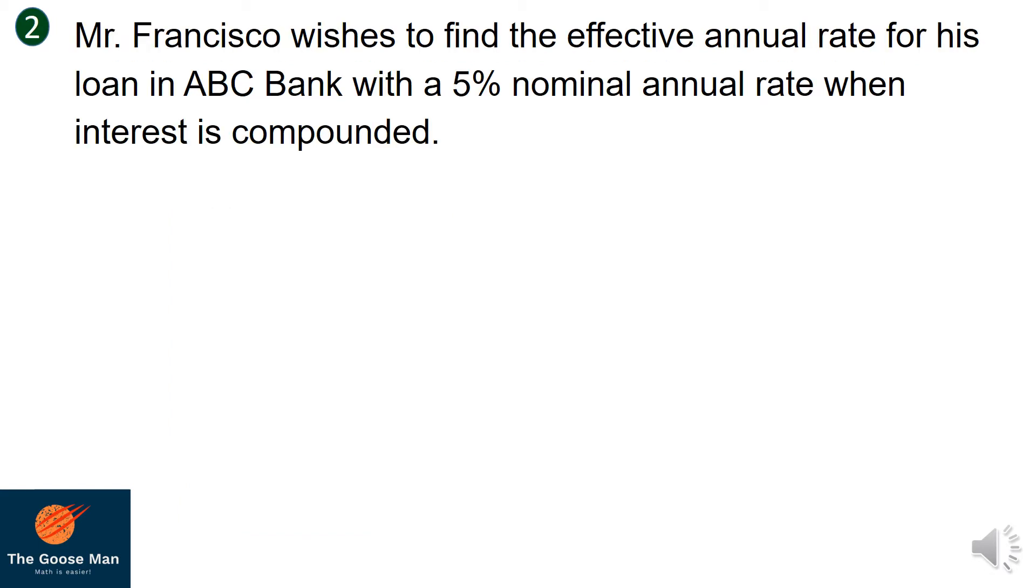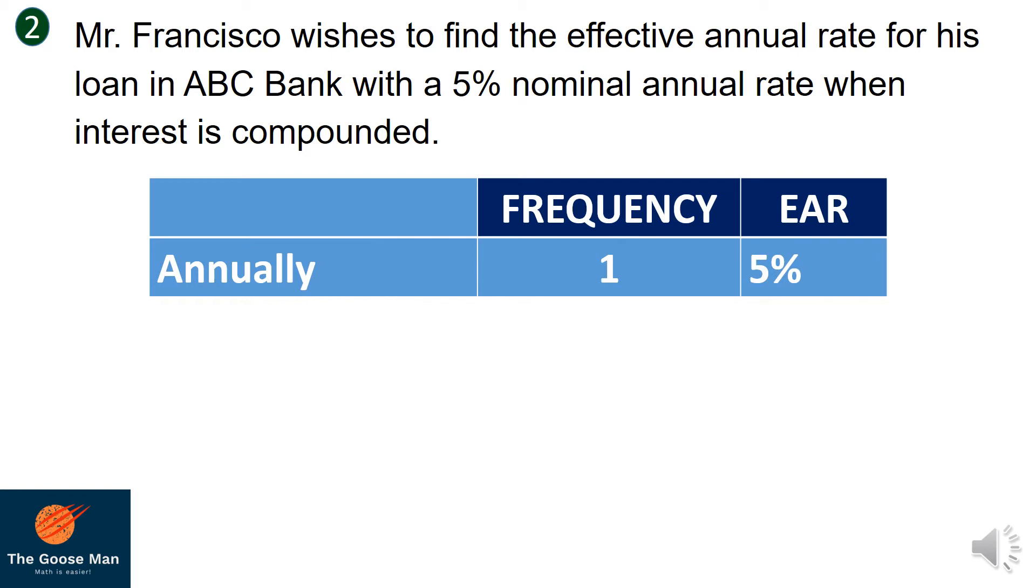If we want to know the relationship of the compounding frequency and the effective annual rate, let us consider this example. Mr. Francisco wishes to find the effective annual rate for his loan in ABC Bank with a 5% nominal annual rate when the interest is compounded. The frequency is 1 if we have compounding annually.